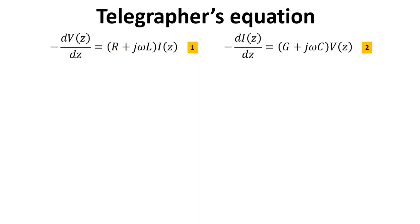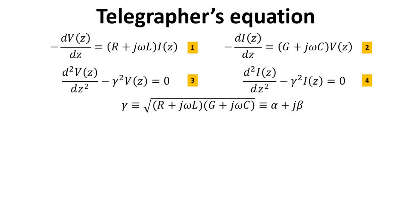These two first-order differential equations that we just derived are known as the telegrapher's equations. Differentiating equation 1 with respect to Z and substituting the expression for dI/dZ from equation 2, we arrive at a second-order differential equation for V in equation 3, where gamma is defined in terms of the line parameters as shown. An analogous second-order differential equation for the current can also be derived as shown in equation 4.